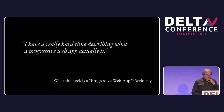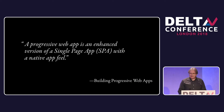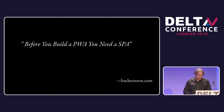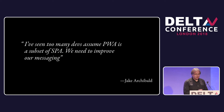Just recently there was a blog post by Diego Kunha, and he said a progressive web app is an enhanced version of a single-page app with a native app feel — which, to quote The Last Jedi, is impressive, because every single part of that sentence is wrong. It's understandable, because before that there was an article on Hacker Noon whose title was 'Before you build a progressive web app, you need a single-page app.' No. Jake from Google noticed: 'I've seen too many devs assume that progressive web app is a subset of a single-page app, and we need to improve our messaging.'